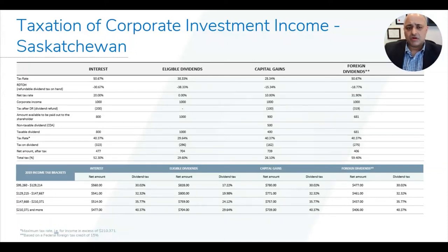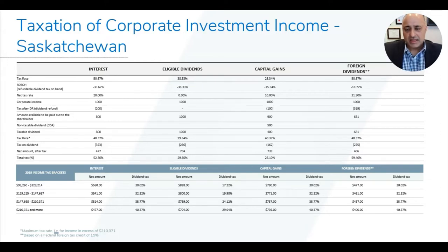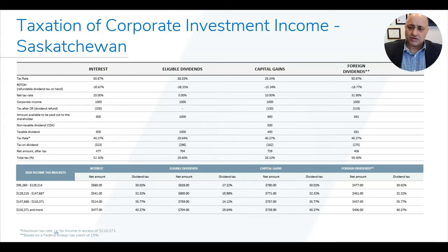Today our goal is to talk about taxation of corporate investment income. There are two kinds of income inside your corporation. Number one is called active income, which you earn from your business activity. That active income is taxed at two different rates — the general rate and the small business rate — based on the net revenue of your corporation.